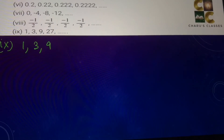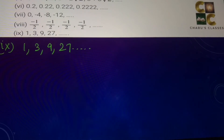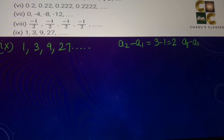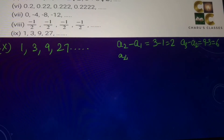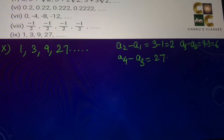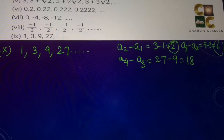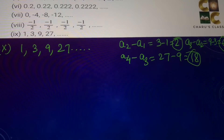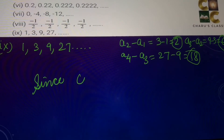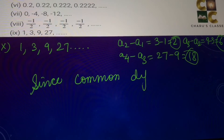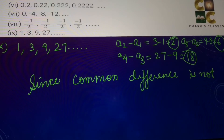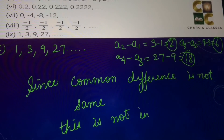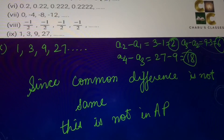Ninth part: 1, 3, 9, 27. A2 − a1 = 3 − 1 = 2. A3 − a2 = 9 − 3 = 6. A4 − a3 = 27 − 9 = 18. The differences are 2, 6, and 18, which are all different. Since the common difference is not the same, this is not in AP.